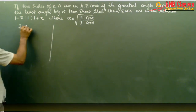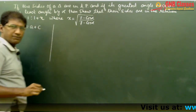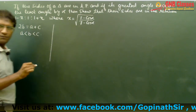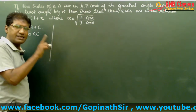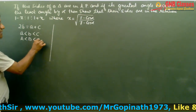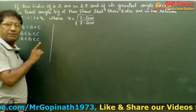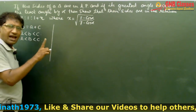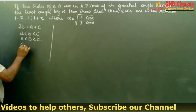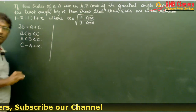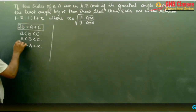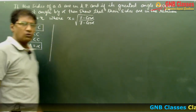Since the sides are in AP, 2b = a + c. Assuming a < b < c, the greatest side is c and the least is a, so angle C is the greatest and angle A is the least. The given condition is that C - A = α. So our two conditions are: 2b = a + c and C - A = α.